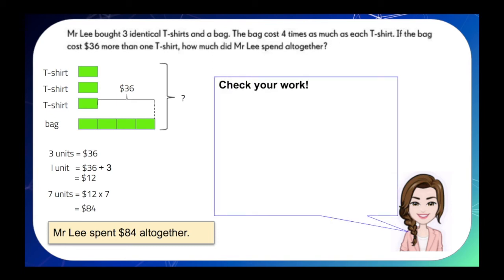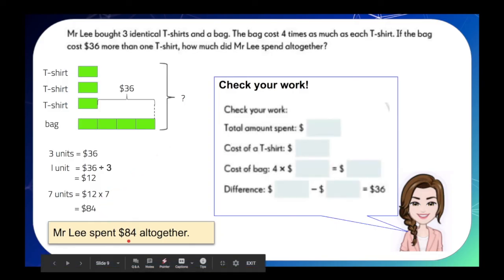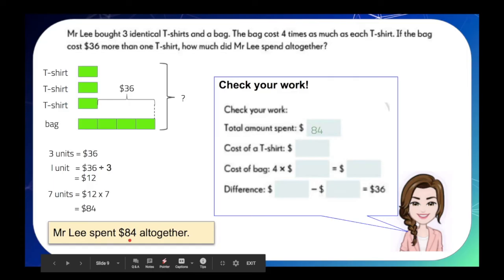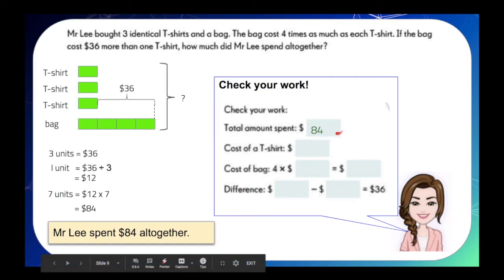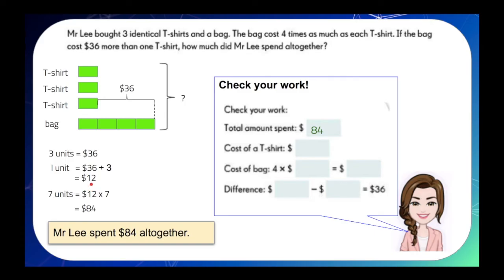Let's check our work. To check our work, we can work backwards. So, by starting with our final answer, the total amount spent by Mr. Lee is equal to $84. And then, we can also find the cost of the shirt by looking at our working. It says here $12. And then, the cost of the bag.